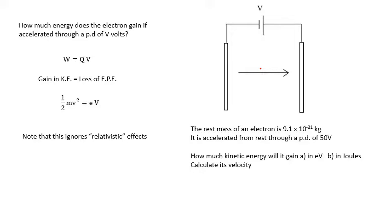So here's a sum I would like you to have a go at now. Pause the video, pen, paper, calculator. The rest mass of an electron is given. It's accelerated through a PD of 50 volts. How much kinetic energy will it gain in electron volts and in joules? Pause the video, do it, and the answer is in three, two, one.